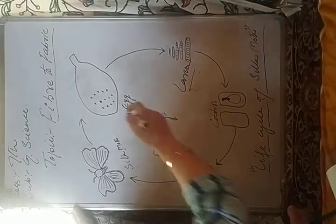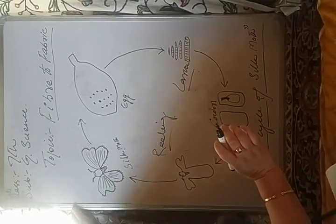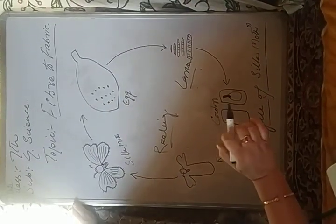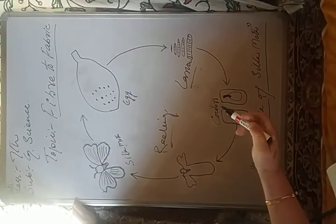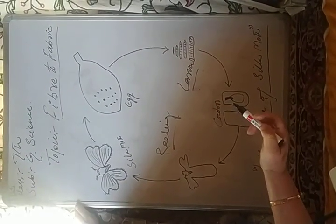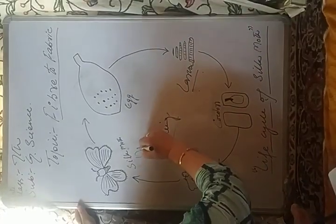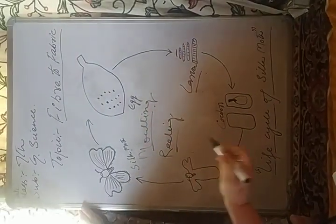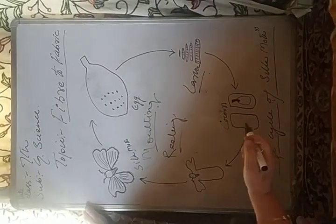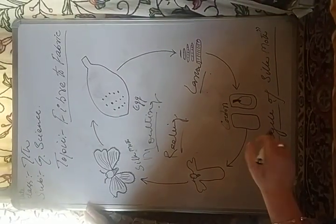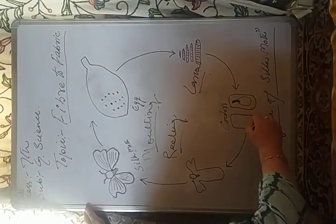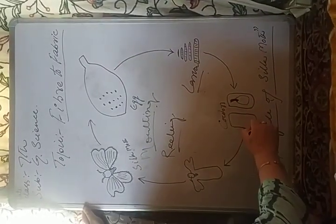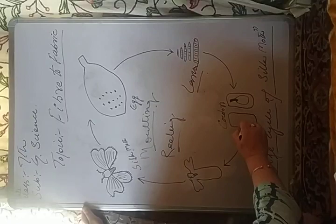The larvae eat the mulberry leaves. The larvae also shed their skin — that process is called molting. After molting, they begin to spin a cocoon around themselves.